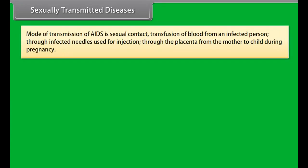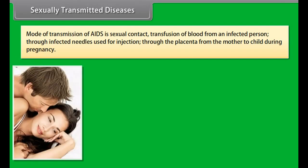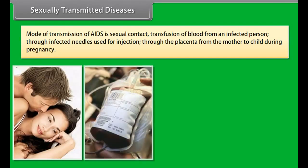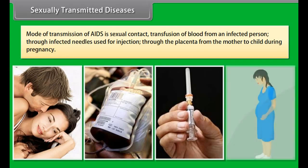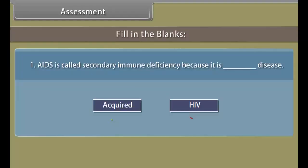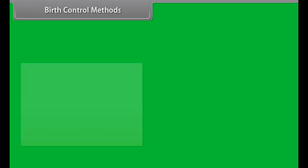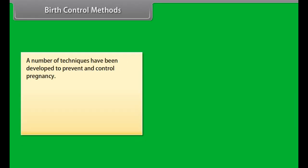The modes of transmission of AIDS are: sexual contact, transfusion of blood from an infected person, through infected needles used for injection, and through the placenta from mother to child during pregnancy.